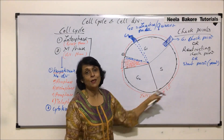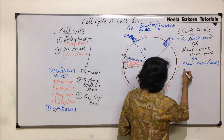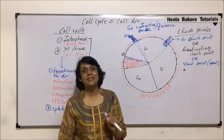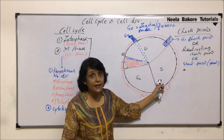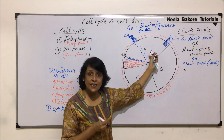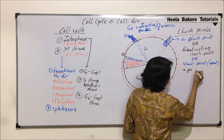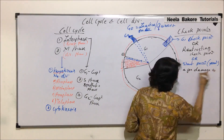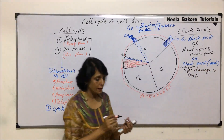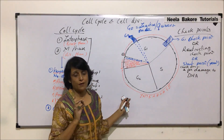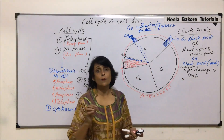This is the G1 checkpoint, also called the restriction checkpoint, because this is the time when the cell gets committed for completing the cell cycle. The first thing checked at this checkpoint is whether the DNA is proper or not — is there any damage to the DNA? Because in the next stage, the DNA is going to replicate, and if the cell already has damaged DNA, then that damaged DNA will get replicated. So it checks for damage to DNA.